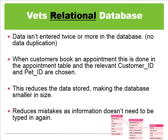First of all, we don't need to enter data twice or more anymore. So once we have the information for the customer — their name and address — we don't need to get that again. When customers book an appointment, we already have that information, and also the information about the dog, so we just need to book an appointment and it will link together. This reduces the data stored and makes it a lot easier and smaller to view, as everything is speeded up.